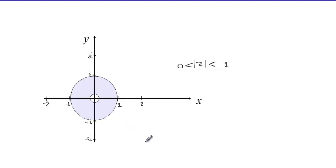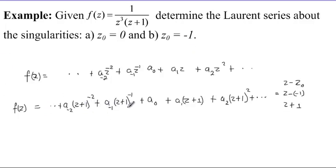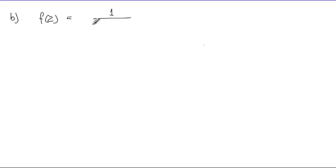The region of convergence around z₀=0 is a punctured disk, and I think up through here the first part of the exercise is done. Now we proceed to the second situation, which requires us to develop this function as a Laurent series around z₀ equals minus 1. We recall that the series must come in terms of (z plus 1). Turning to Part B, we still have f(z) equals 1 over z³(z+1), and the series must come in terms of powers of (z plus 1).